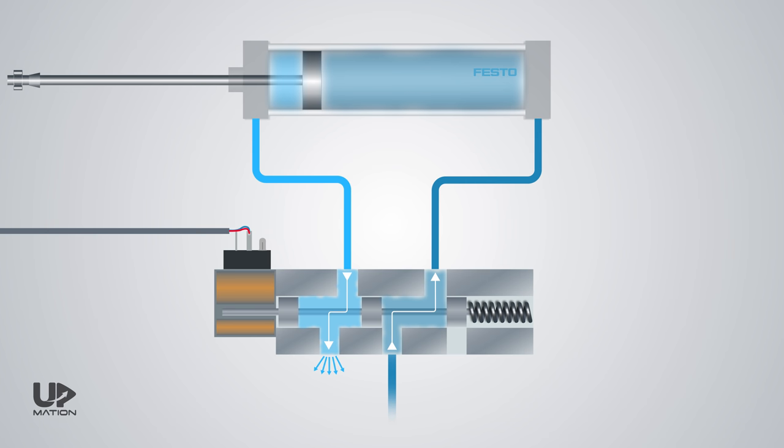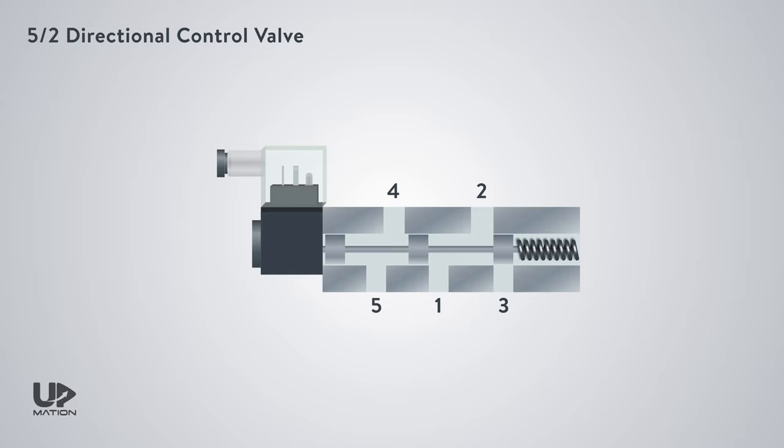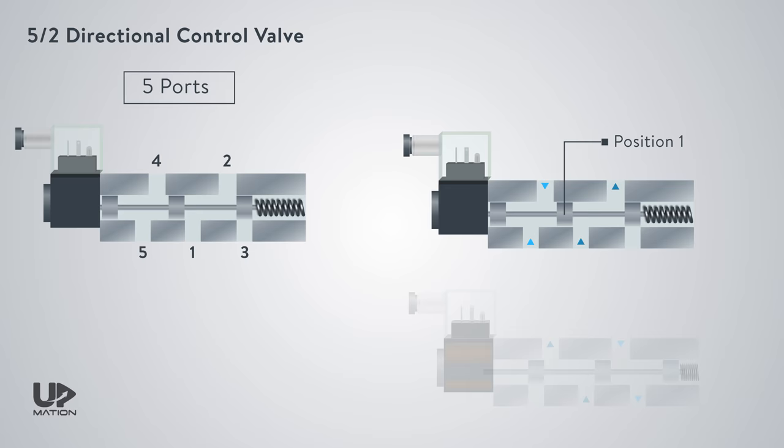Now it's time to learn how these valves are called and how to read their graphic symbols. This valve is known as a 5/2 solenoid valve or a 5/2 pneumatic directional control valve. The first digit is for the number of ports the valve has. And the second digit is for the number of states the spool can be in.